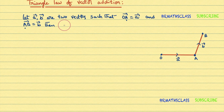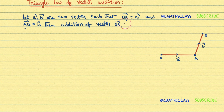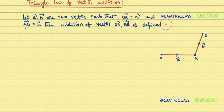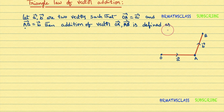Then, the addition of vectors OA-bar and AB-bar is defined as the directed line segment joining from the initial point of the first vector to the terminal point of the second vector.